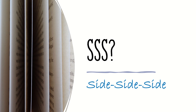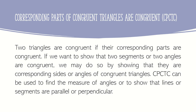When do you think two triangles are congruent? From the definition of congruent triangles, congruent triangles are triangles with corresponding sides having the same length and with corresponding angles having the same measure. The congruence of the corresponding parts of triangles follows. For convenience, you may use the acronym CPCTC to mean corresponding parts of congruent triangles are congruent. CPCTC can be used to find the measures of angles or to show that lines or segments are parallel or perpendicular.